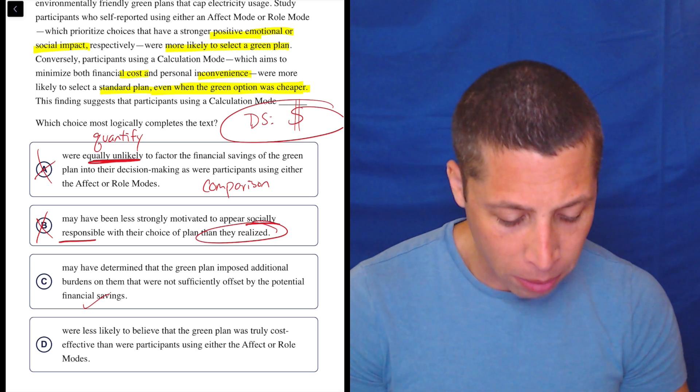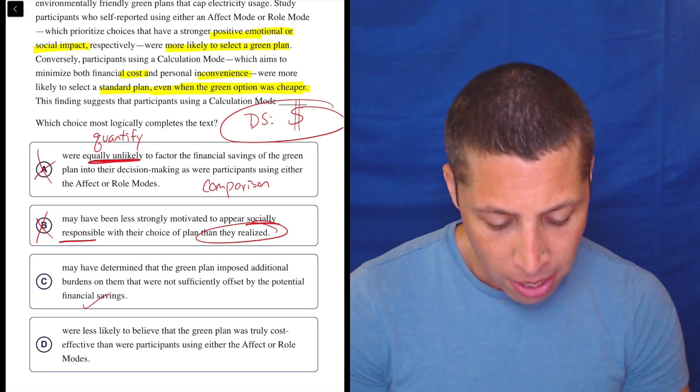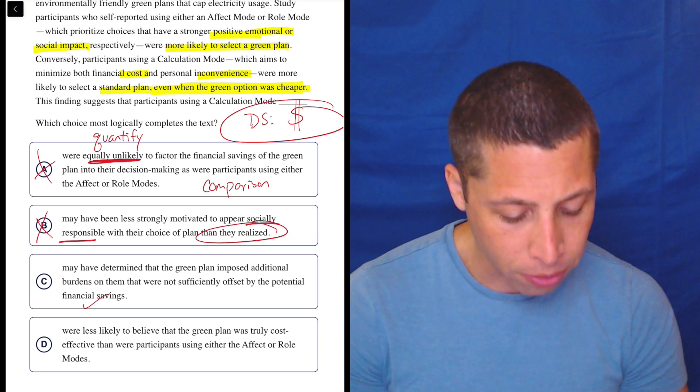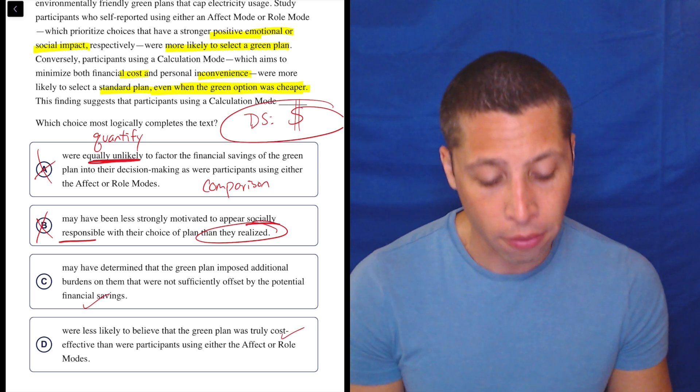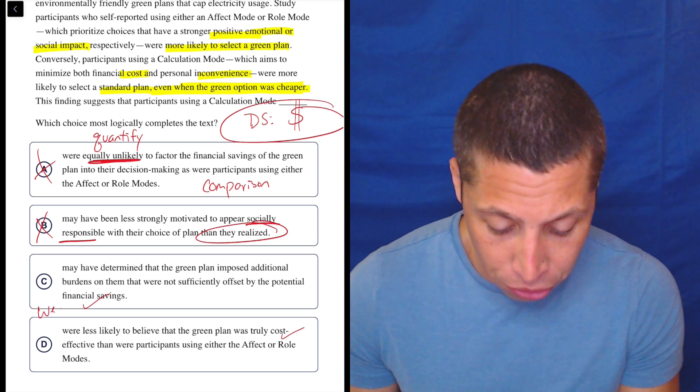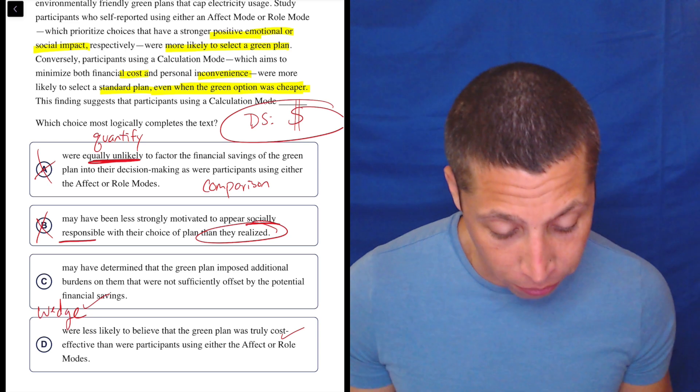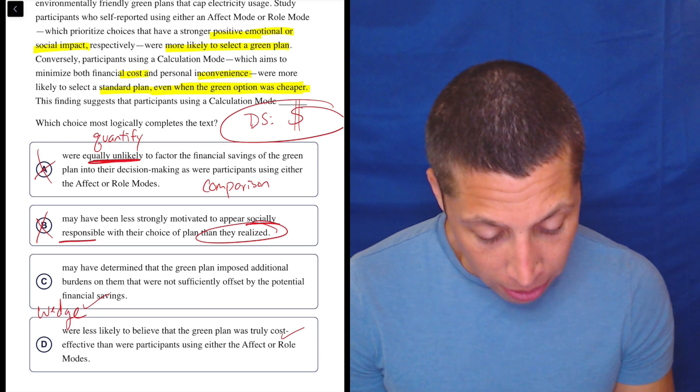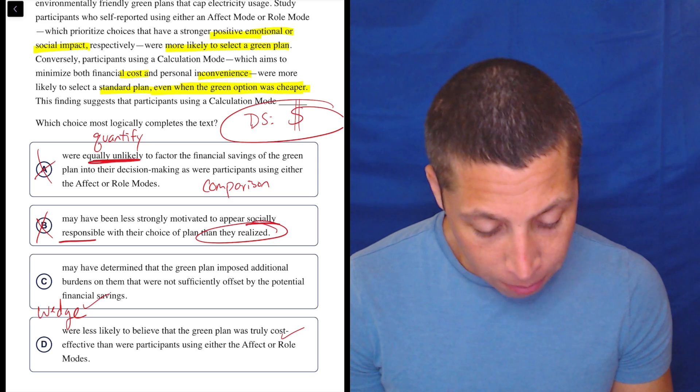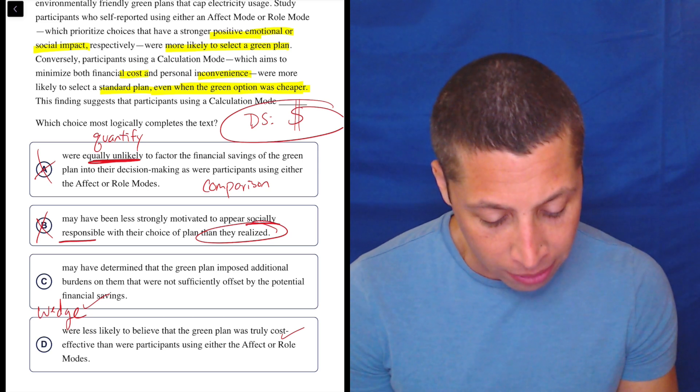They were less likely to believe that the green plan was truly cost effective than were participants using either the affect or role modes. That definitely has cost. So that part checks off. Now I can think about a wedge. Why are these choices different? This one is only really about the calculation people.